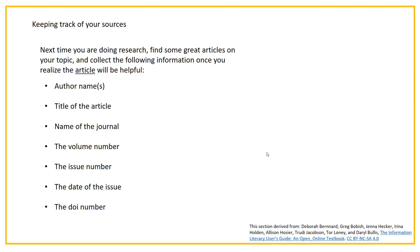There's a fair bit of information that goes into a reference, so it's important as you go along with your research to document the sources you think are going to be helpful. If you find an article, for example, that you think is going to be helpful, you need to keep track of all this information: the author name, title of the article, volume number, issue number, date of the issue, and the DOI number.